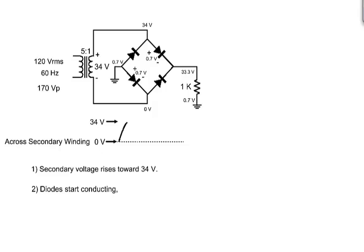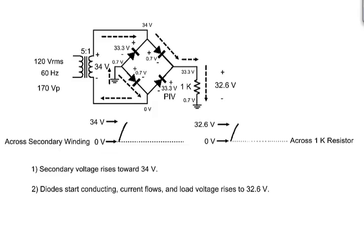which is 0.7 volts across each of the two forward bias diodes in series with the load, which allows current to flow. And the load voltage rises to 32.6 volts.